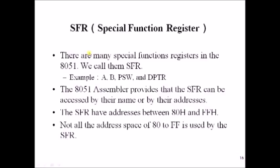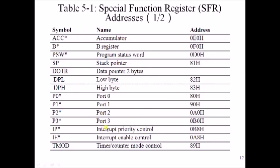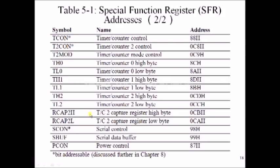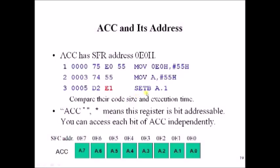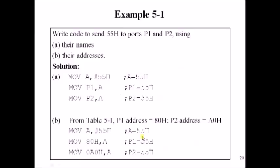Now let us see the SFRs. ACC, PSW, and DPTR are SFRs located at addresses 80H to FFH. SFRs marked with an asterisk are bit-addressable registers, meaning each single bit can be accessed without modifying the contents of other bits. For example, SETB A.1 initializes bit position 1 inside the accumulator without affecting other bits.